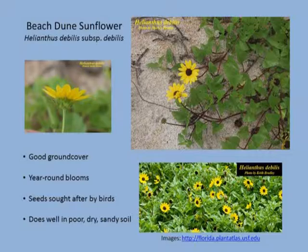The beach dune sunflower is one you've probably seen used more often in landscaping. It's a nice ground cover that flowers all year. Birds really enjoy the seeds. There are actually three subspecies of beach dune sunflower in our state — an east coast subspecies, a west coast, and a north Florida subspecies — so it's another one to ask at the nursery to see where they're getting their propagating material.